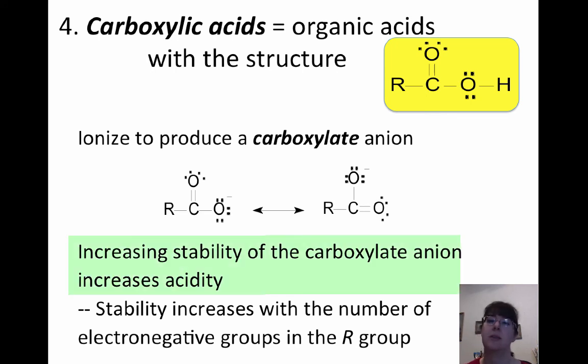And you can increase stability by increasing the number of electronegative groups. So again, this is similar to what we saw previously with the more lone oxygens you have, the more electronegative things are. The more electronegative groups you have in the R group, the more likely the whole thing is to be negative, the better an acid.